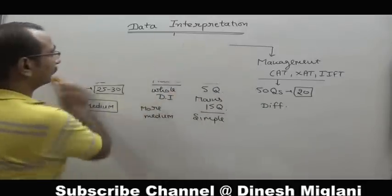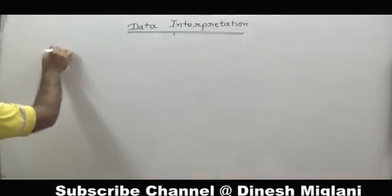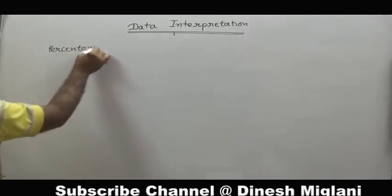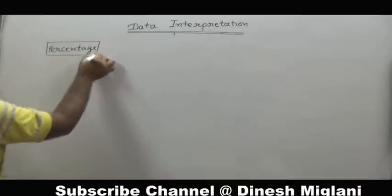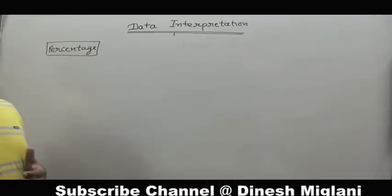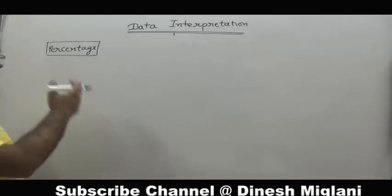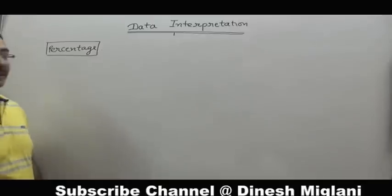The next point we try to understand is what concepts of mathematics are involved in DI — what are the basic things required for solving the questions of DI. When we start with the basic things for solving DI questions, the first important point is the concept of percentage. For better understanding of percentage, you may watch my basic sessions on percentage on my YouTube channel, but in this session I just state what are the basic requirements of percentage that you need.